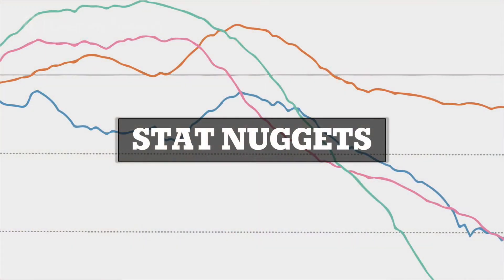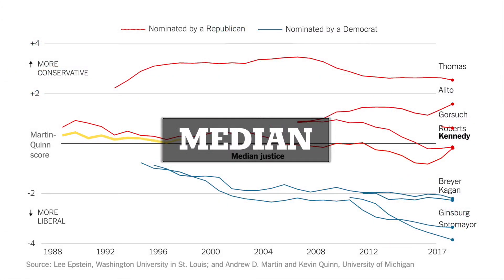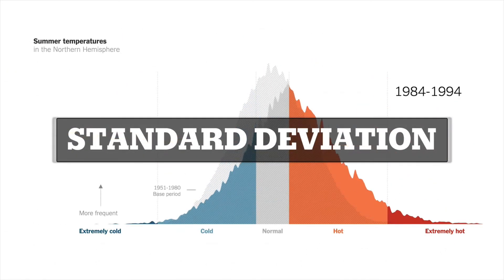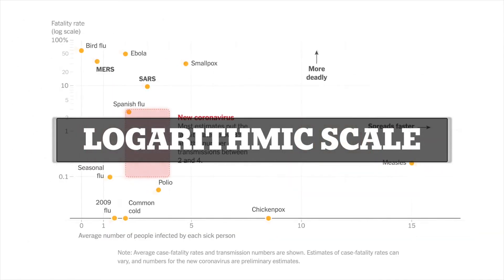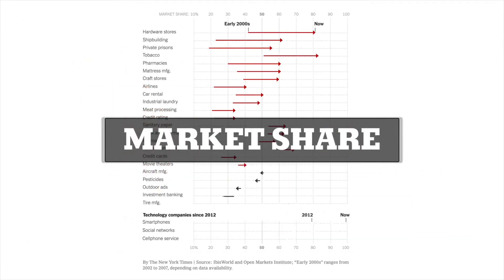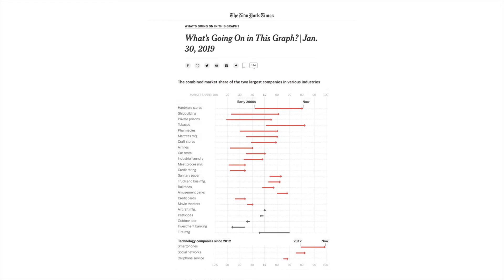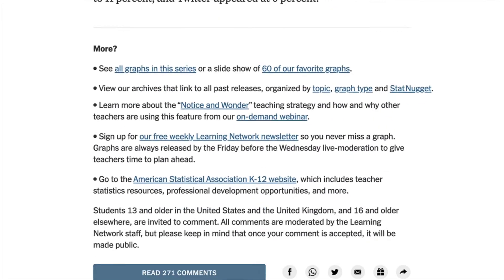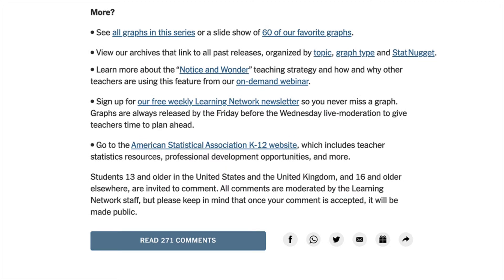With each graph we try to highlight different stat nuggets, or math and statistics concepts that can be explored through that graph. Past graphs have looked at stat nuggets like median, standard deviation, logarithmic scale, and market share. At the bottom of every 'What's Going On in This Graph' post you can find three indices that sort graphs by topic, type, and stat nugget.